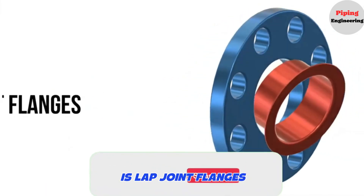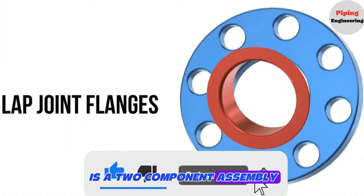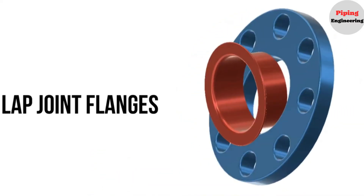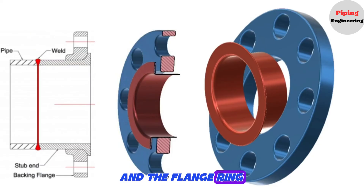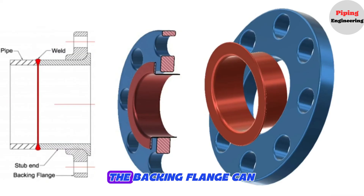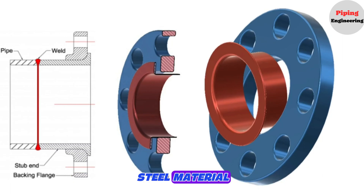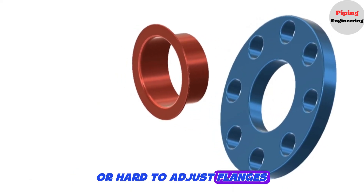The next flange type is lap joint flanges. A lap joint flange is a two-component assembly — a stub end and a loose backing ring flange placed over it. The stub end is butt welded to the pipe, and the flange ring can be rotated to align with the mating flange. The backing flange can be of a different material. The stub end is normally fabricated from carbon steel material to save cost. Lap joint flange connection is particularly useful for large or hard-to-adjust flanges.